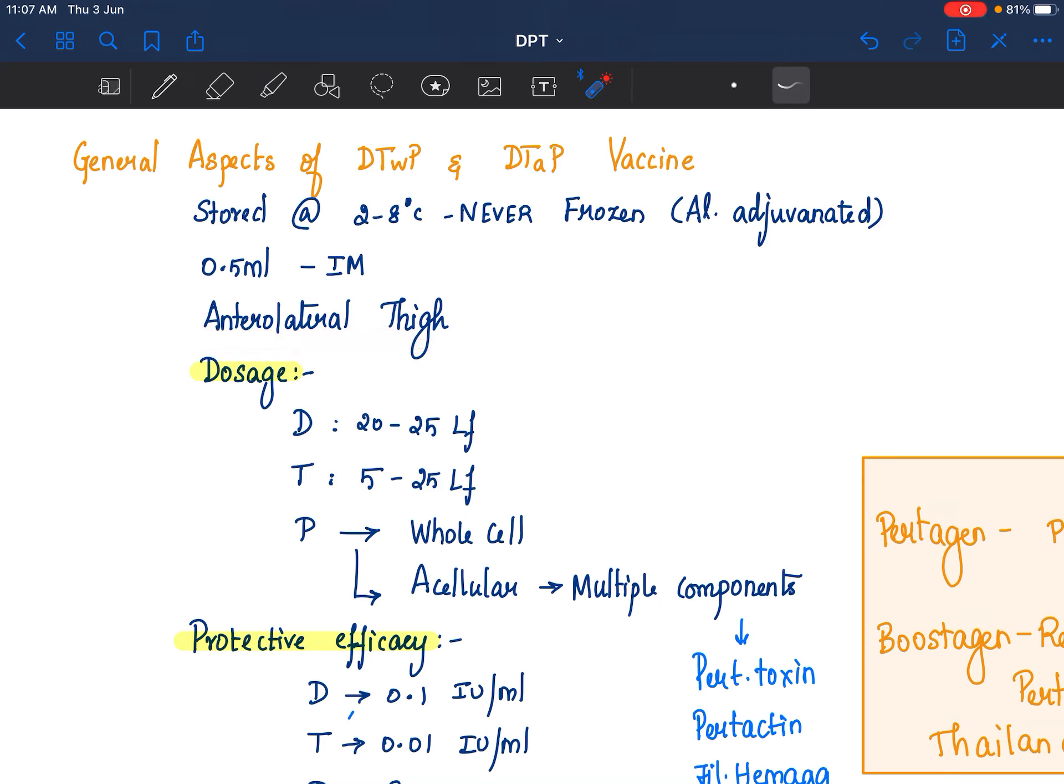The content of the vaccine is like this. Diphtheria, tetanus and pertussis. So basically there are 3 components in it. Diphtheria 20 to 25, Tetanus is 5 to 25. This is flocculation units.